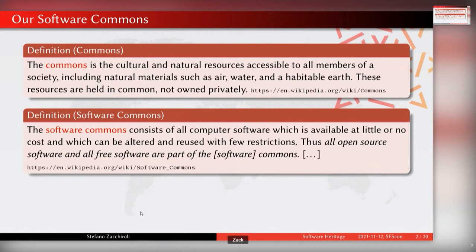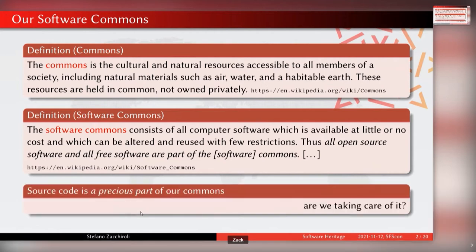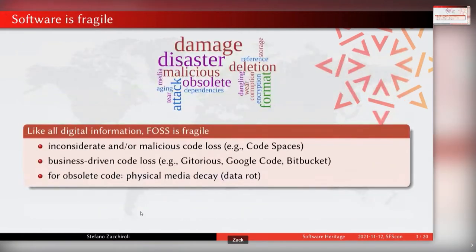We are all together creating and maintaining this body of digital knowledge which is the software commons. If you agree with that, there is a legitimate question of whether, aside from contributing with our own lines of code, we are taking good care of this body of digital code — ensuring there is a sustainable future for the preservation of all this software we are producing together. There are reasons for concern because, like any digital information, free software is fragile — it can disappear and can be distributed today from a place that tomorrow might no longer be there.